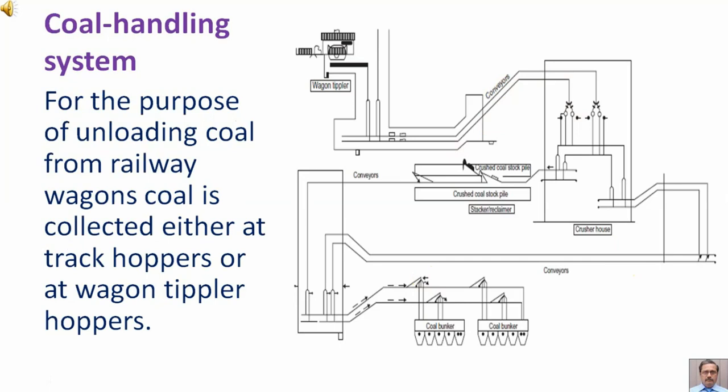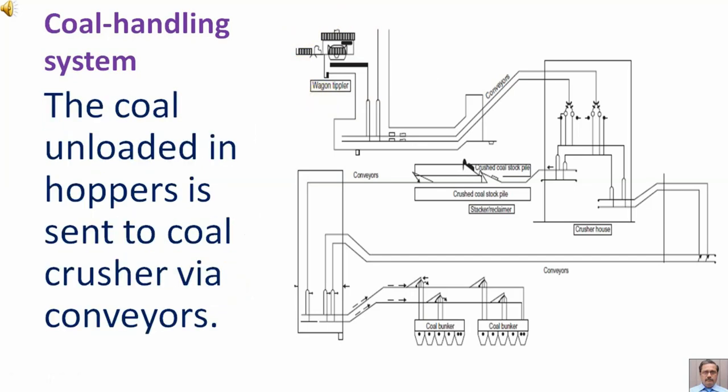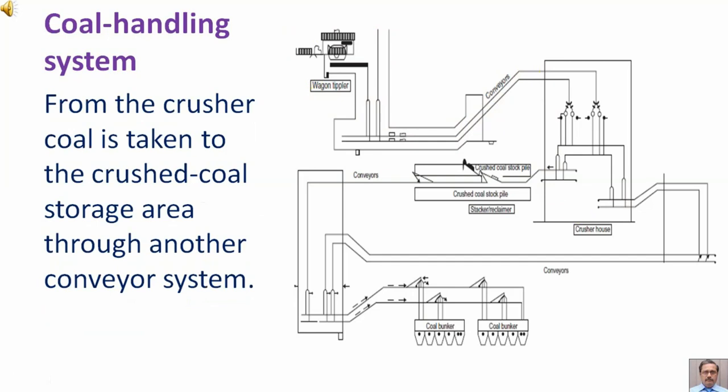For the purpose of unloading coal from railway wagons, coal is collected either at track hoppers or the wagon tipler hoppers. The coal unloaded in hoppers is sent to coal crusher via conveyors. From the crusher, coal is taken to the crushed coal storage area through another conveyor system.